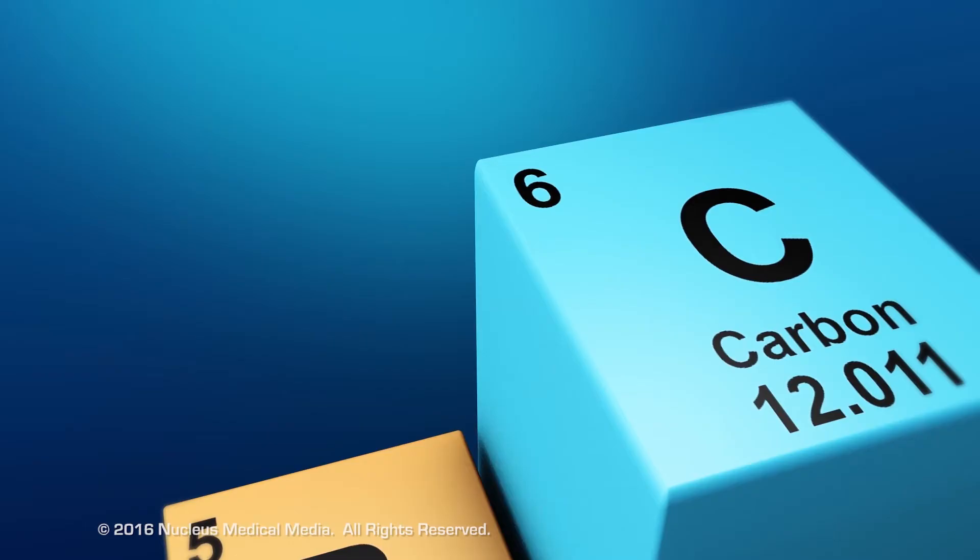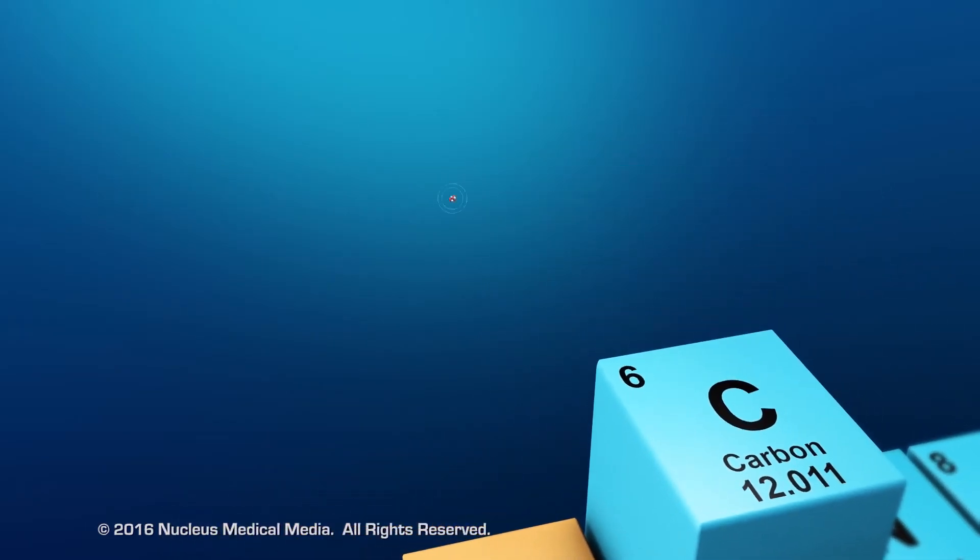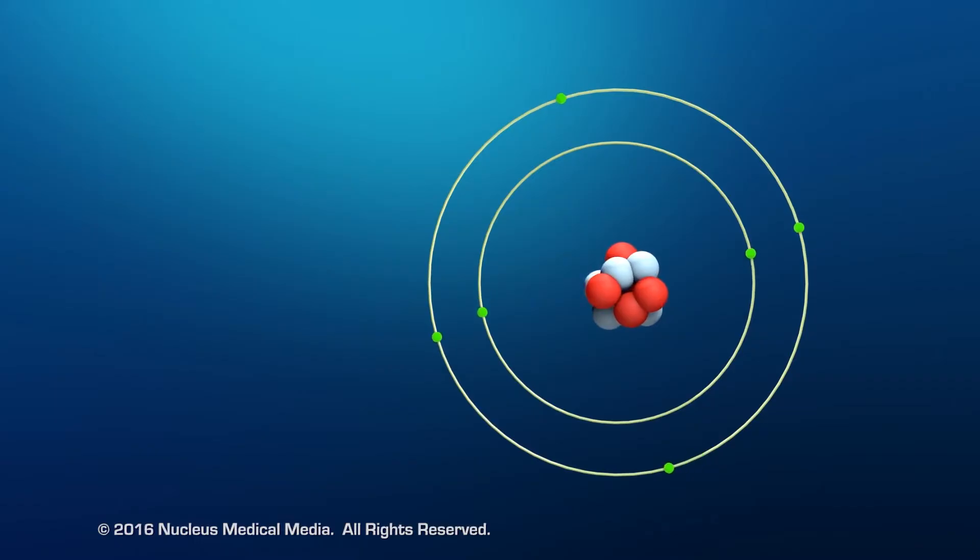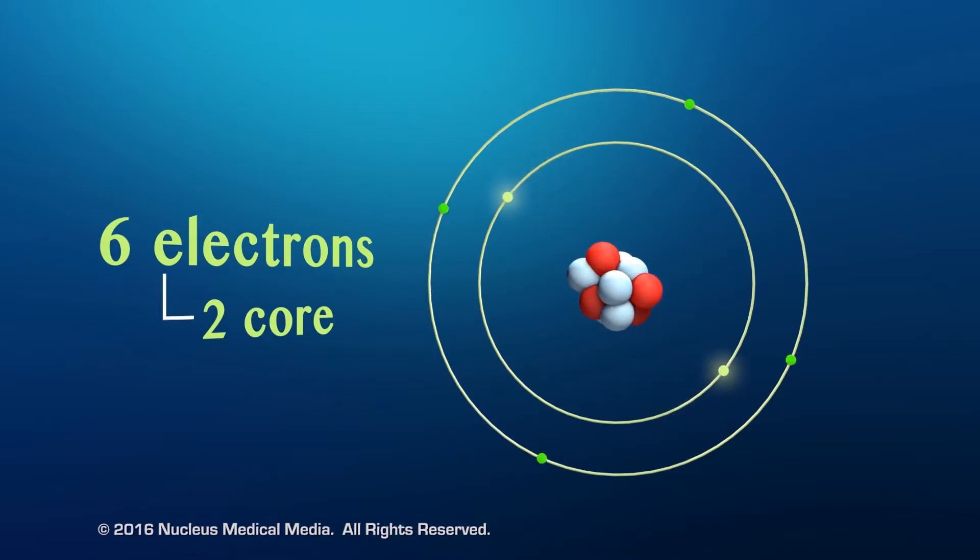For starters, carbon has an atomic number of six. That means that every atom of carbon has six protons in the nucleus. As an electrically neutral atom, carbon also has six electrons. Two core electrons are in the first energy level, which means it has four remaining valence electrons in the second energy level.